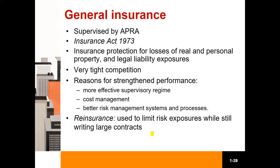The general insurance industry in Australia is highly concentrated. Competition within the industry is robust, with improved transparency of pricing and policy features resulting from improved consumer information access and also through financial services reform and regulation.